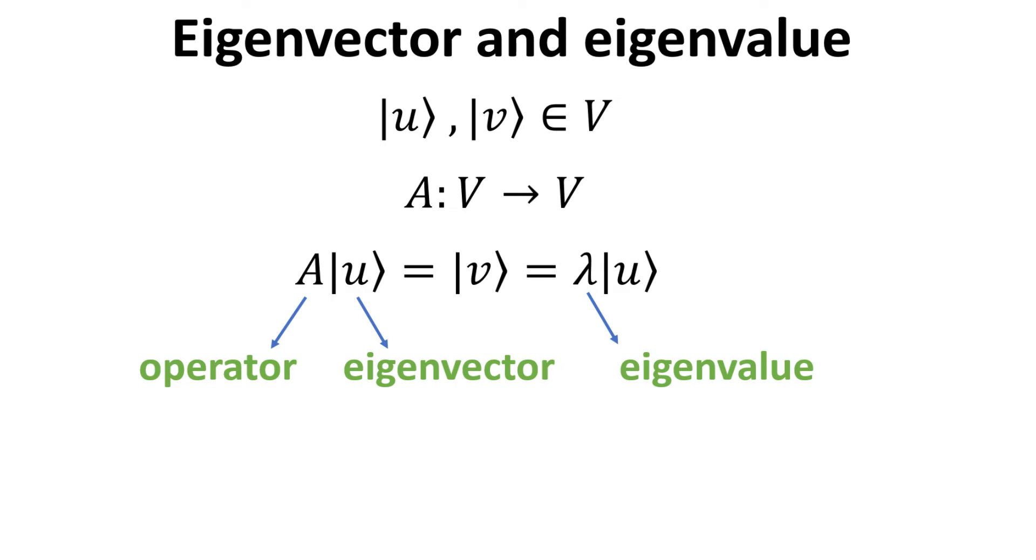If ket V is a simple scalar multiple of ket U as shown, then U is an eigenvector of A, where the scalar lambda is also known as the eigenvalue.